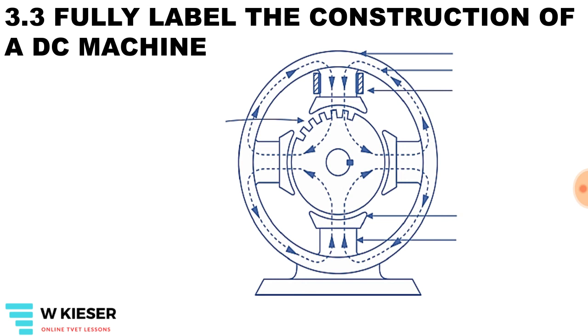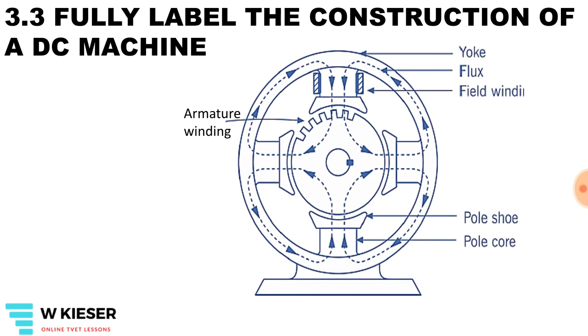Let's fully label the construction of a DC motor. We have the yoke, the flux, the field winding, the pole shoe, the pole core, and the armature assembly and armature windings.